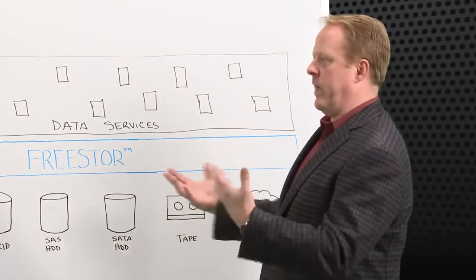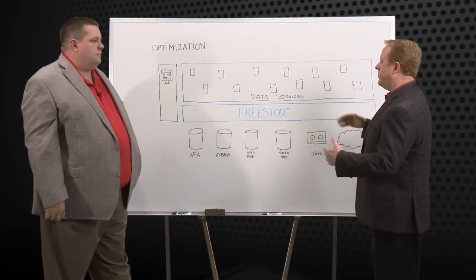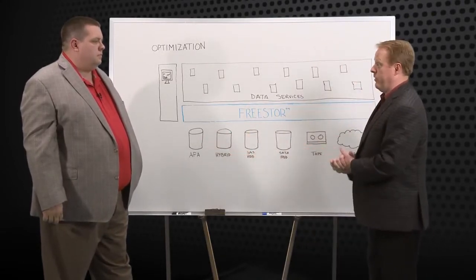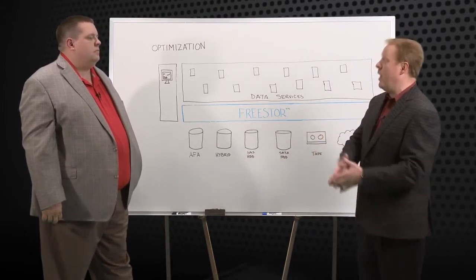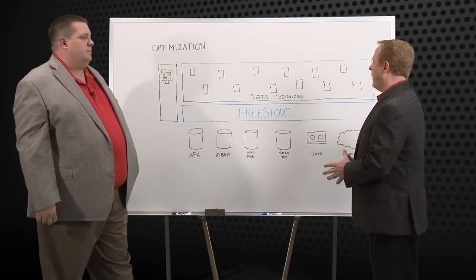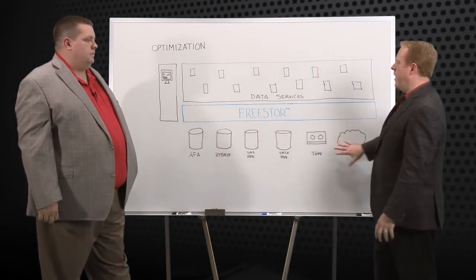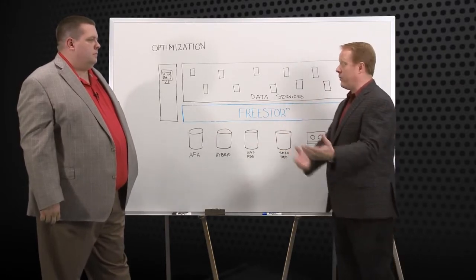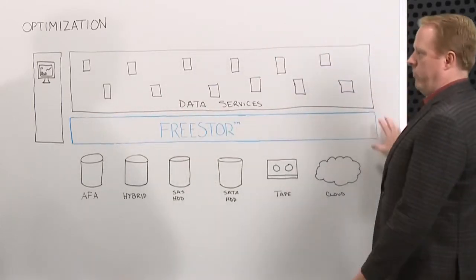And we talked about our data mobility because we abstract. Now we can go across those different types of storage. But just because you put in different types of storage doesn't mean you're being efficient with that storage. In fact, you may actually be exacerbating the problem with more silos, more islands of storage. One of the things with FreeStore, because we are virtualizing the underlying storage, pull part of it in, pull all of it in, whatever works for you and your organization, your requirements. But when you pull it in, you create a common global storage pool.